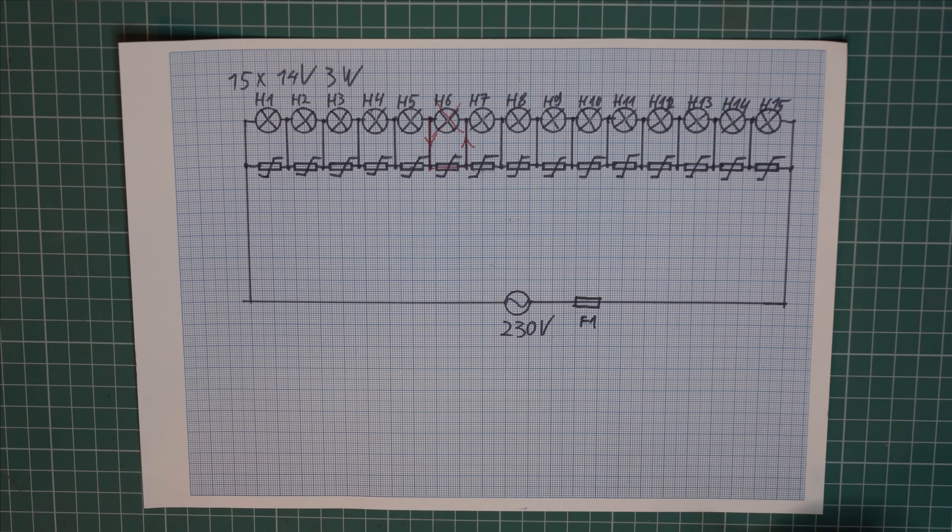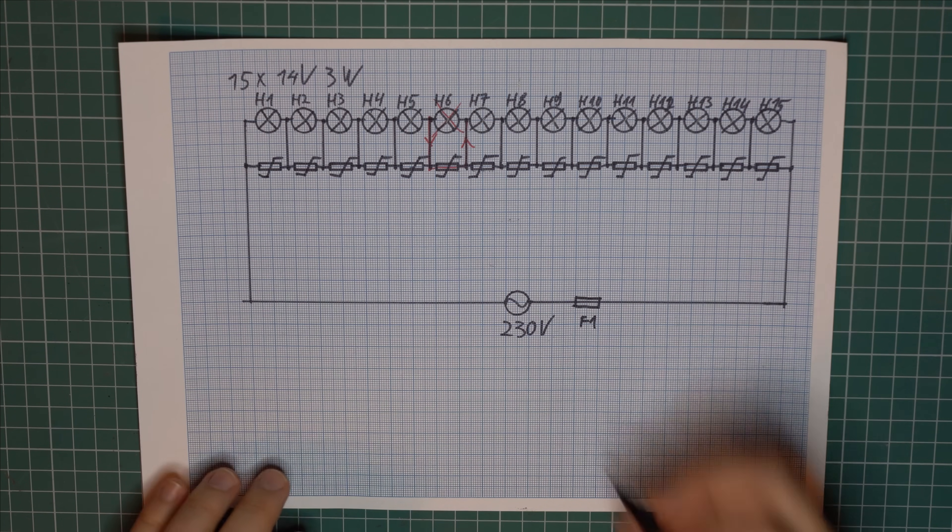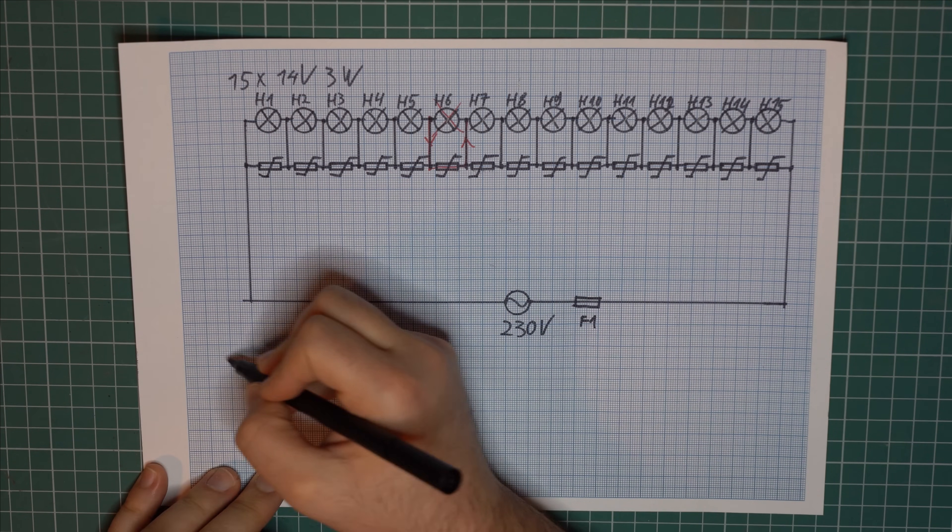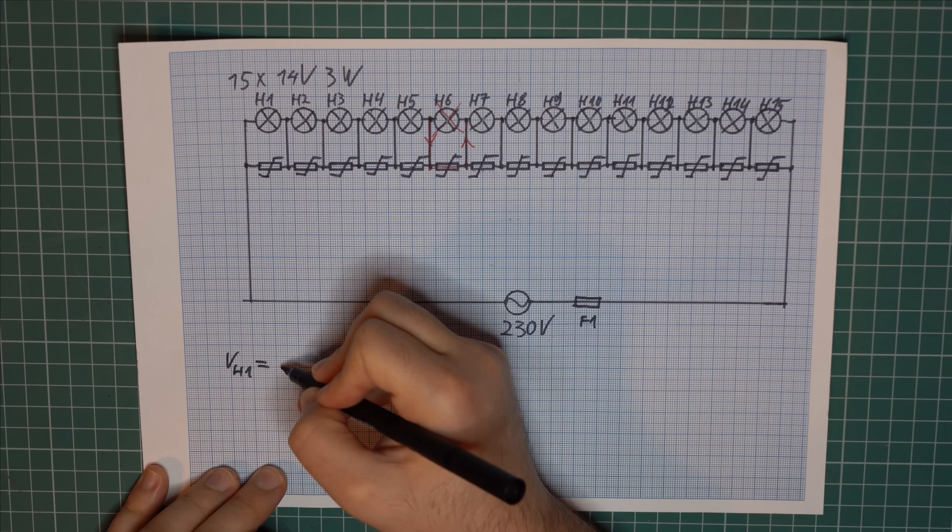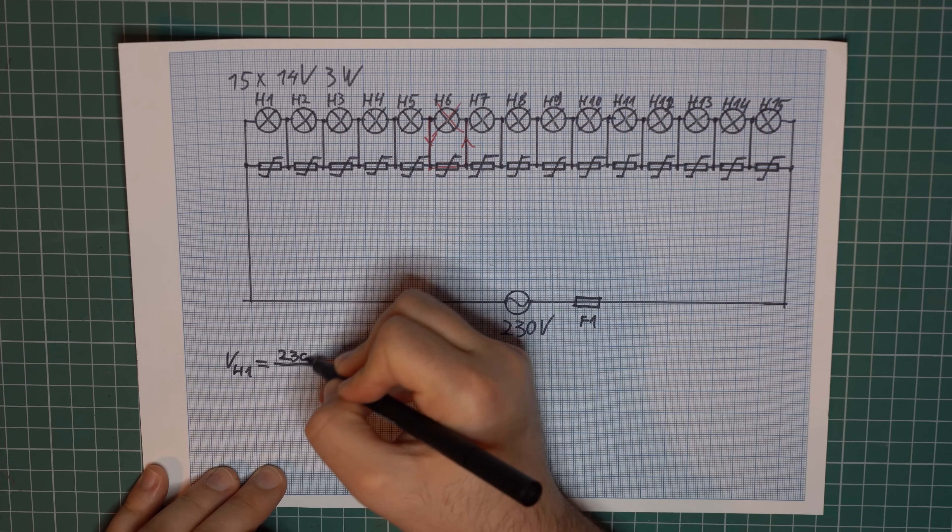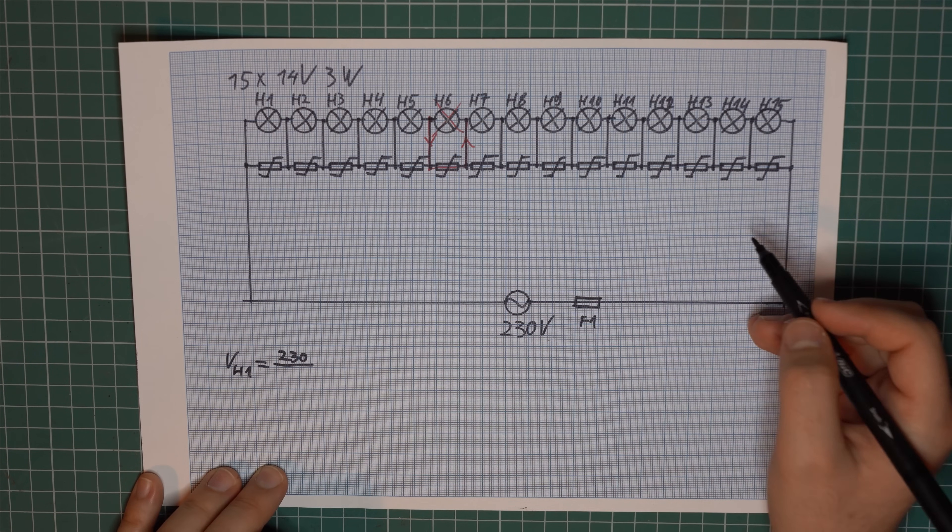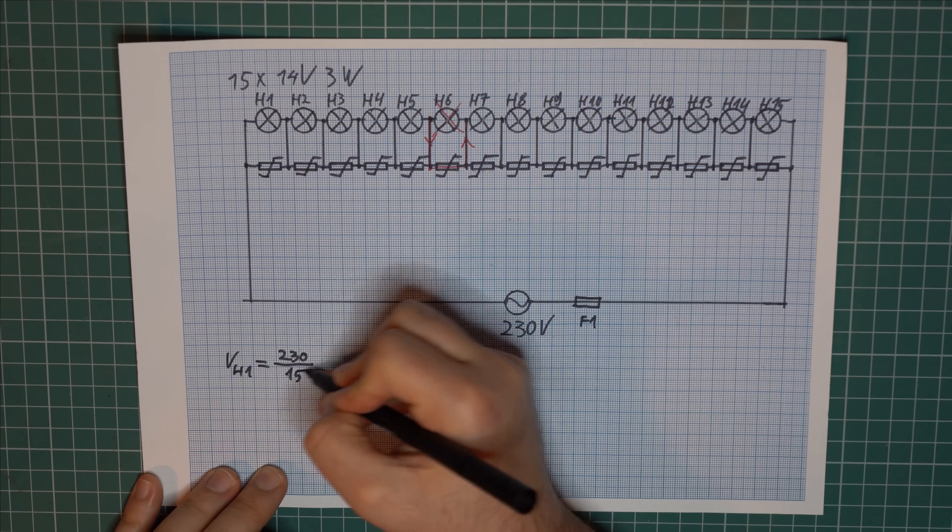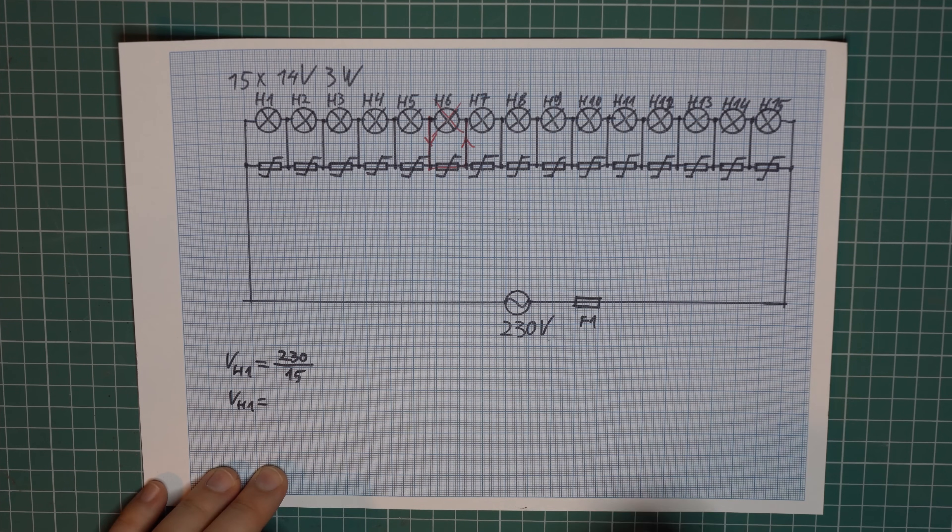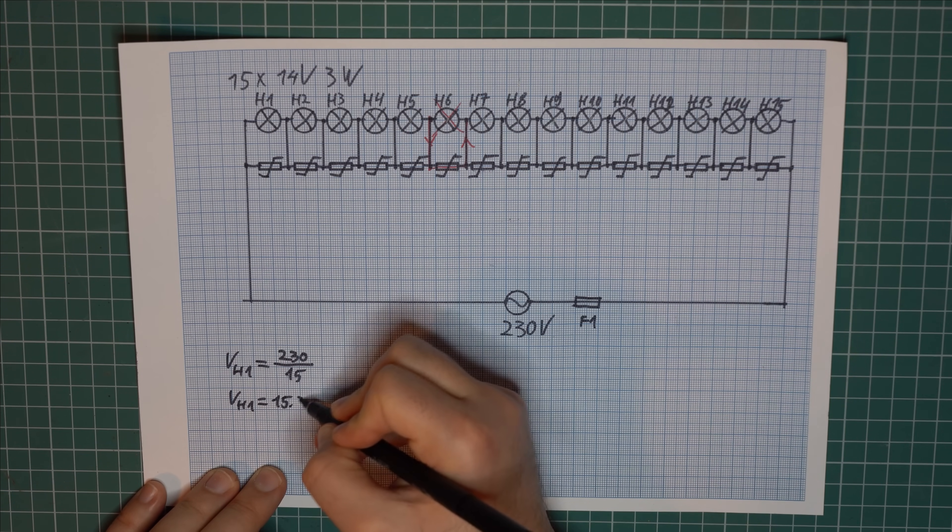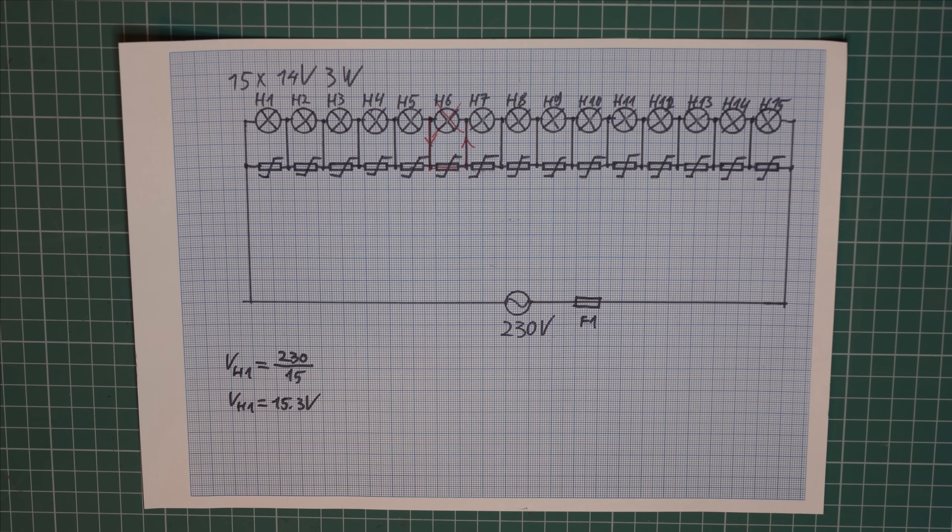First of all let's calculate the voltage for one light. So the voltage across one light is VH1, let's call it that. Equals simply 230 volts which is the mains voltage divided by 15 which is the number of lights. So the voltage across one light is around 15.3 volts.